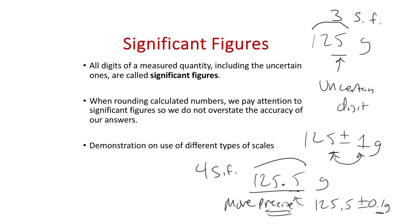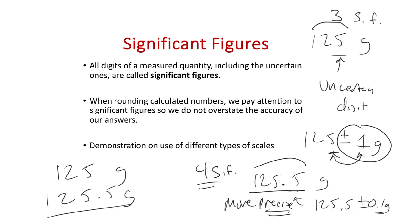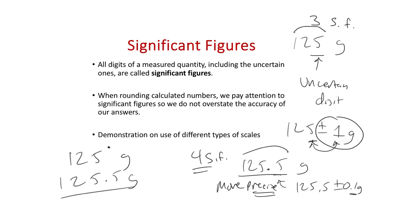Precision means how many digits we can record; more digits means greater precision. Accuracy is different — it refers to how close the measurement is to the actual true value. When rounding calculations, we round based on the least precise measurement. Adding 125 grams (±1) plus 125.5 grams (±0.1): the ±1 is the bigger factor, so we round the result to 251 grams — three sig figs — because the ±1 uncertainty is what limits our precision.